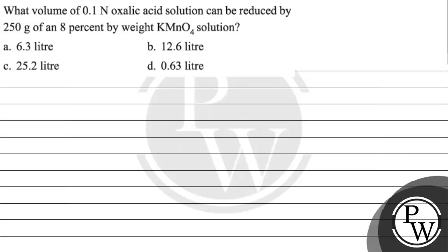The question says: what volume of 0.1 normal oxalic acid solution can be reduced by 250 grams of an 8 percent by weight KMnO4 solution? Option A: 6.3 litre, option B: 12.6 litre, option C: 25.2 litre, option D: 0.63 litre.